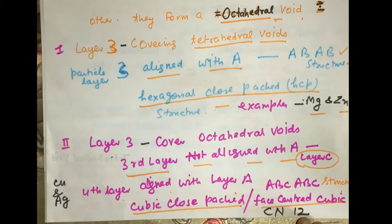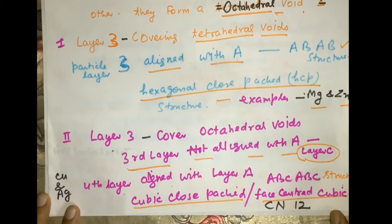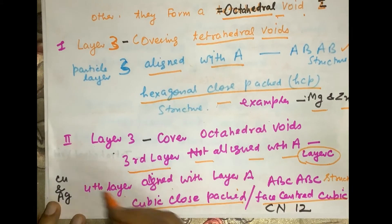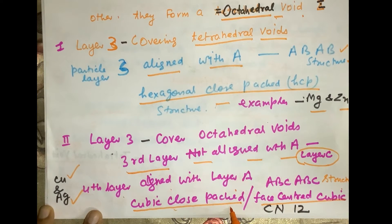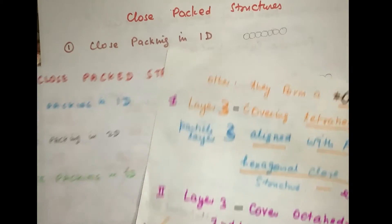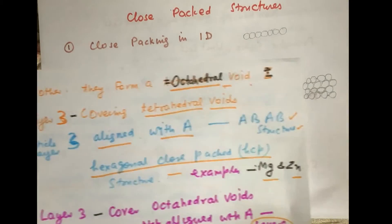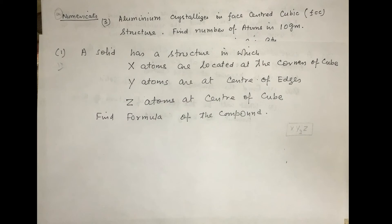This ABCABC structure is called the cubic close packed structure, or face centered cubic structure. The coordination number is 12 because one particle is surrounded by 12 other particles. Examples of this structure are copper and silver, which crystallize in the cubic close packed structure.